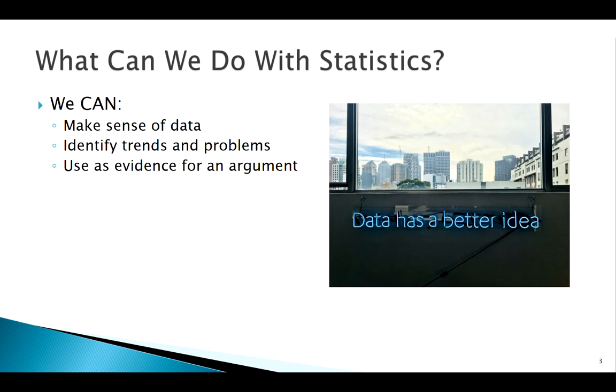Statistics might tell us there's something going on, but what statistics usually can't do - and this is where whatever field or subject you might be an expert in comes in - statistics can tell us something's going on but can't always say why. And if it has identified a problem, it can't always tell us how to fix it. But statistics is what we can use as evidence.